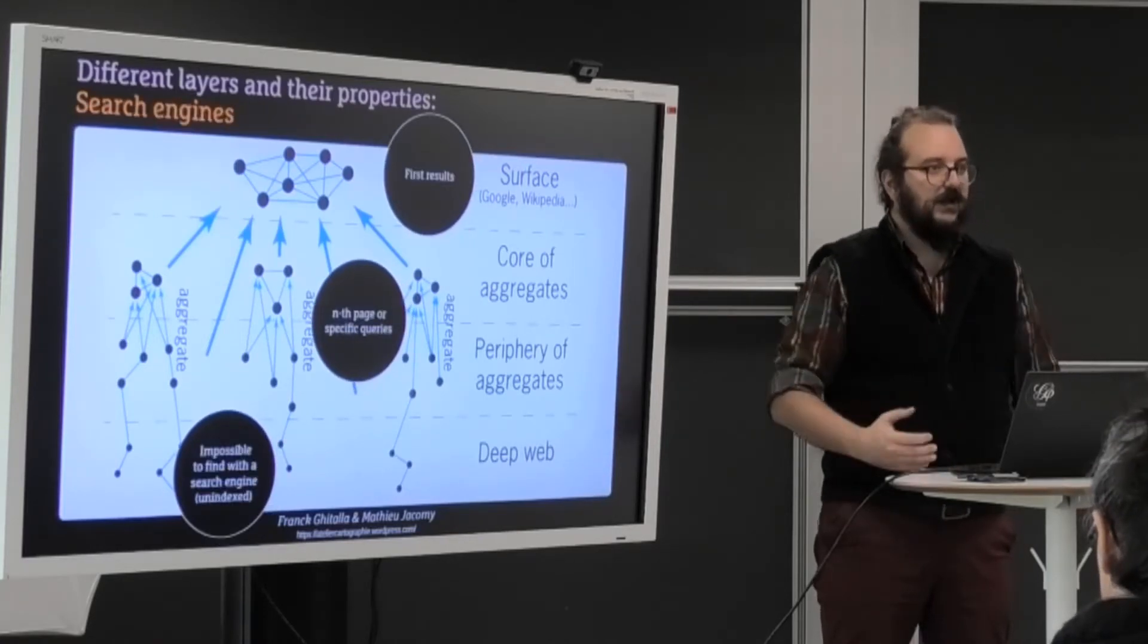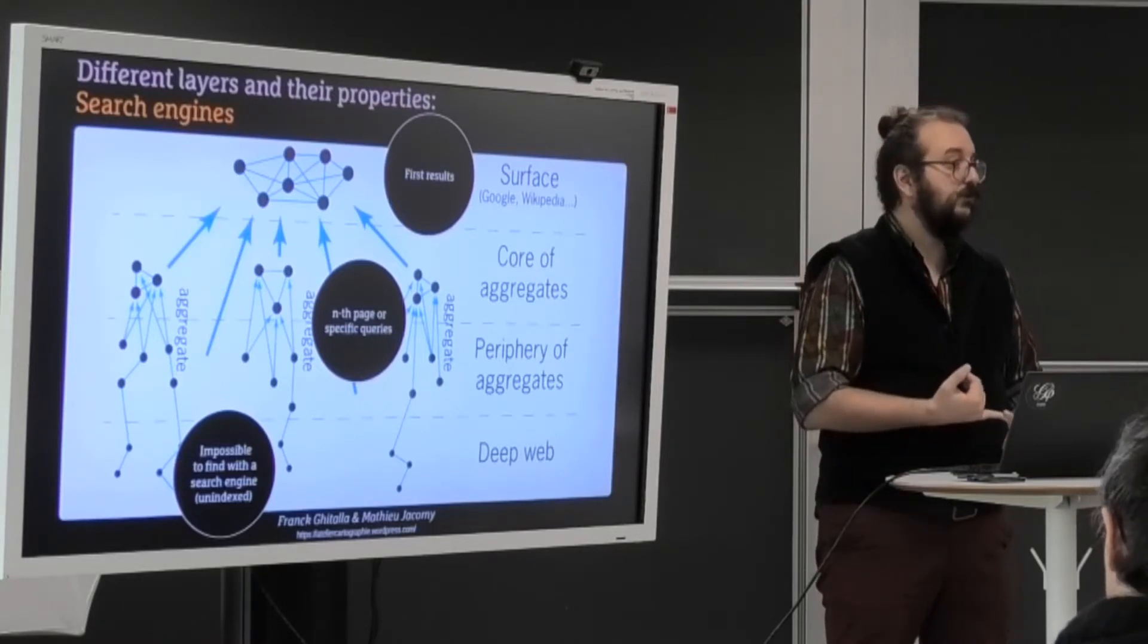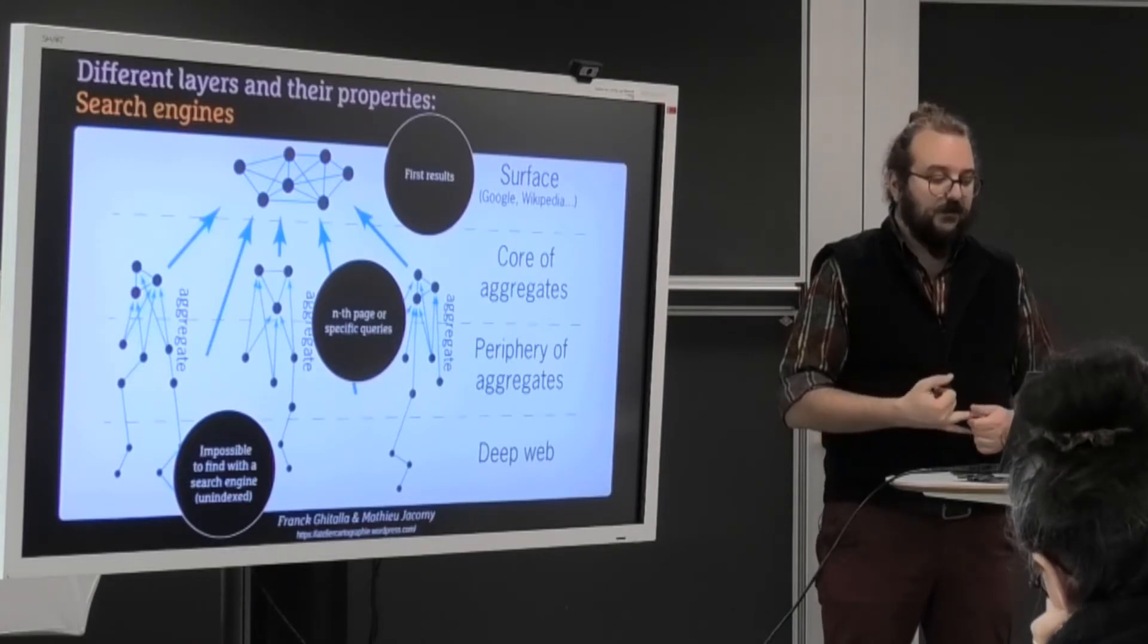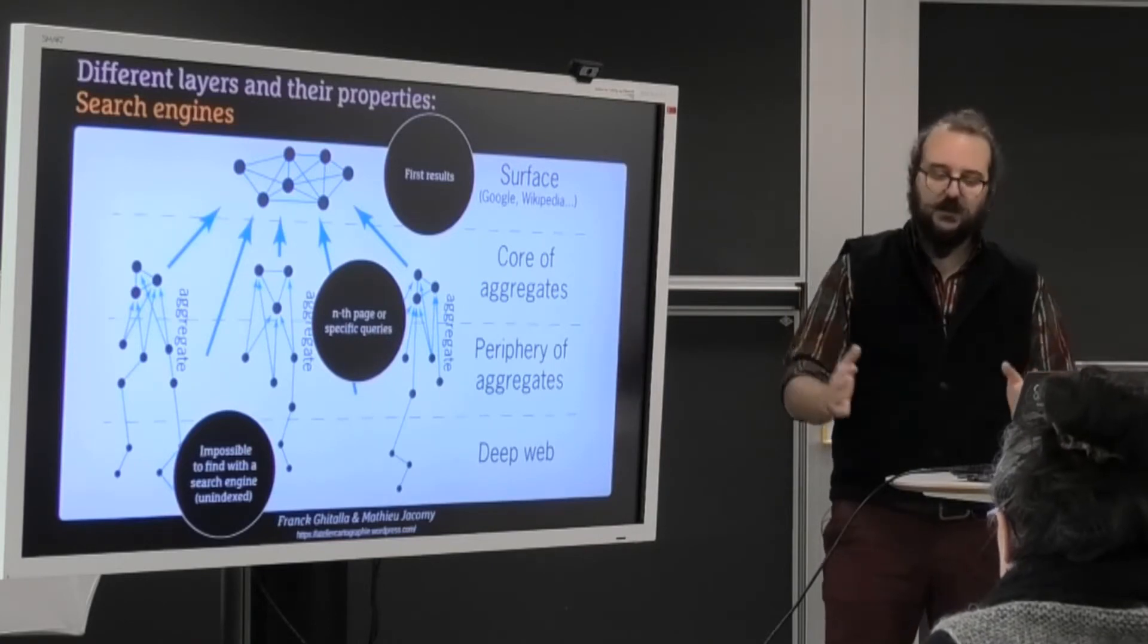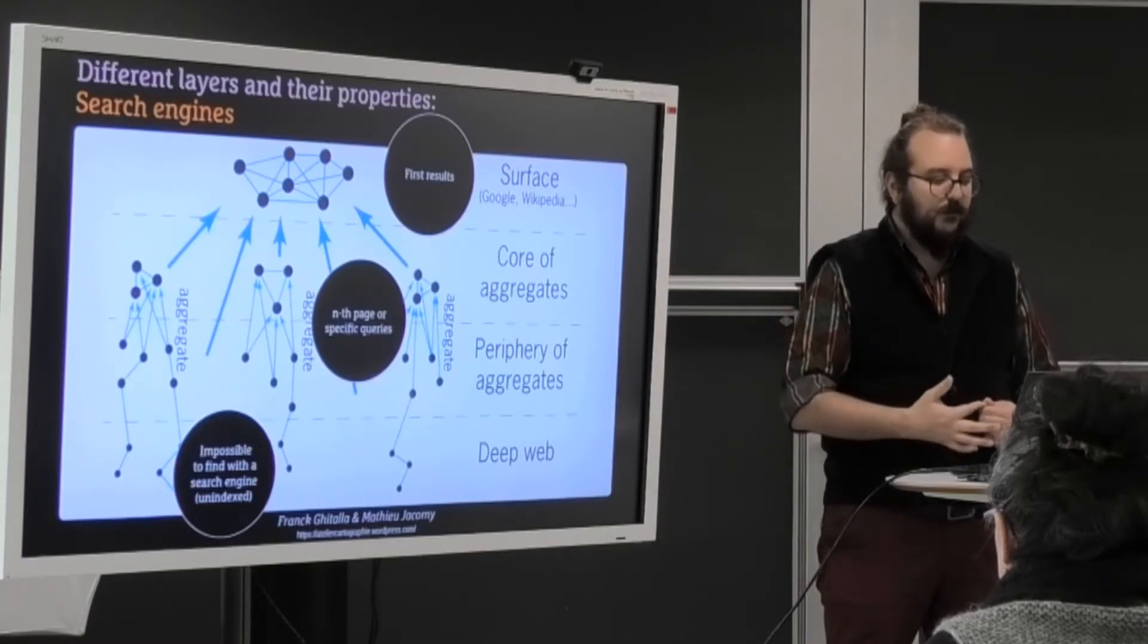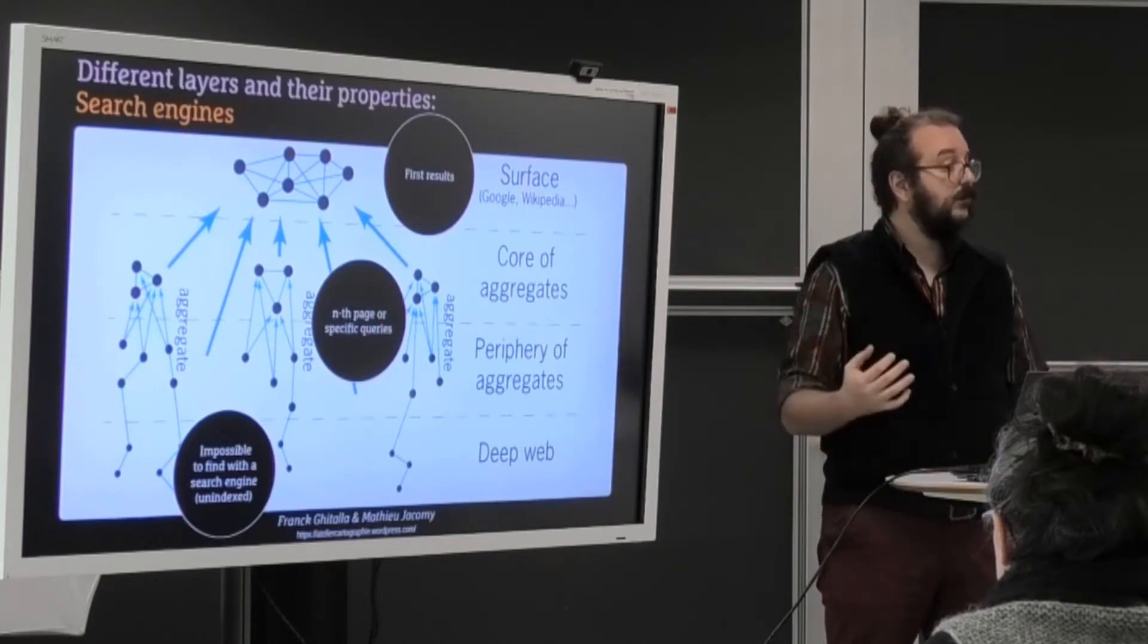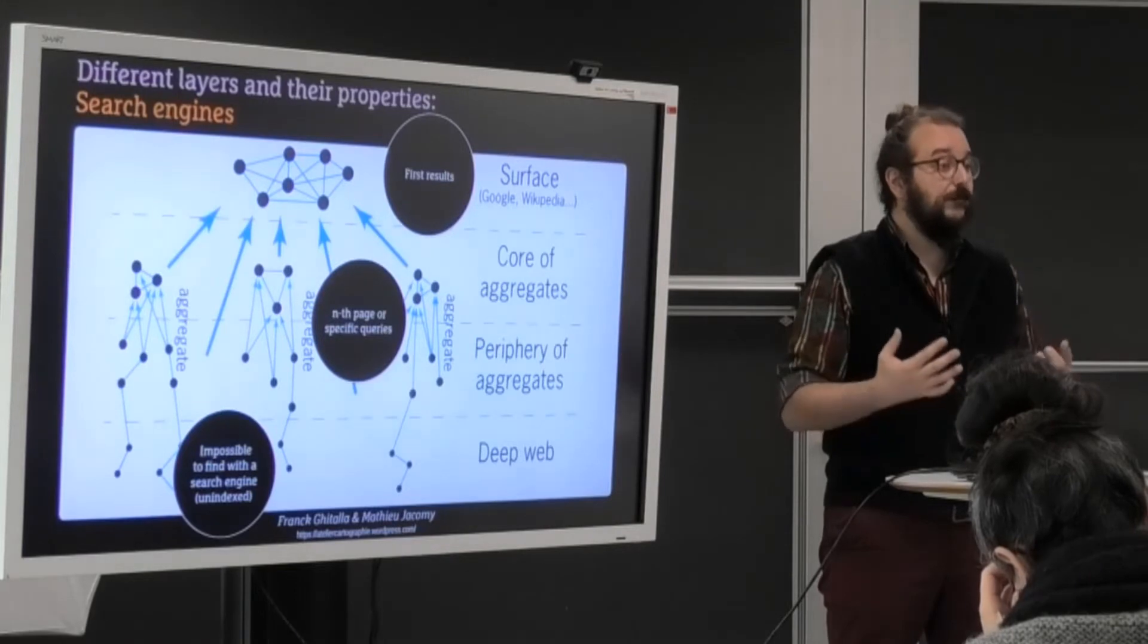And this also means something in search engines. In search engines, the surface is the first results in Google and stuff like that, or for simple queries. That's what you will always find. The aggregates is the things that you will find if you have very specific queries, expert queries, for instance, or if you go beyond the first few pages of Google. And finally, the deep web will often contain resources that are not found in Google. All the search engines together don't know all of the web. So some of the pages that are important to your analysis are not in Google and you have to find them manually.